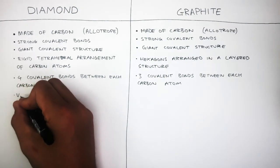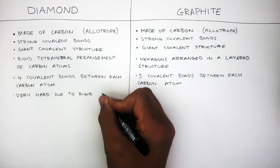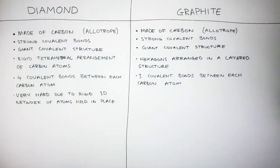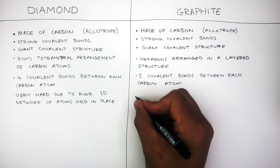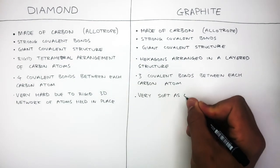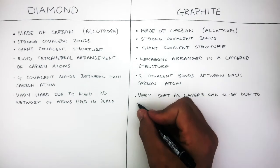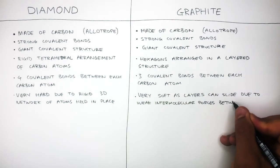Diamond is very hard due to a rigid 3D network of atoms held in place. Whereas graphite is very soft as the layers can slide due to the weak intermolecular forces between the layers.